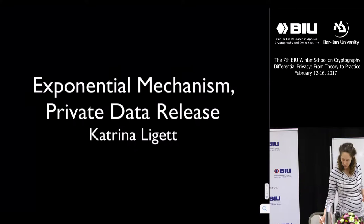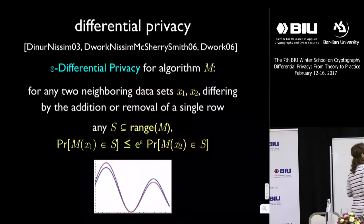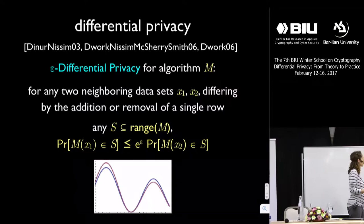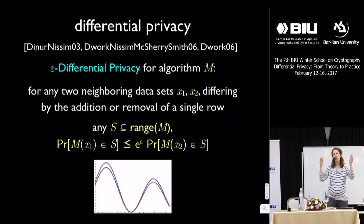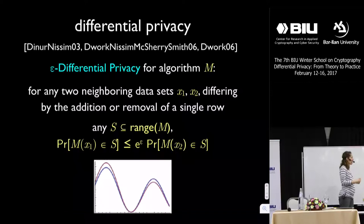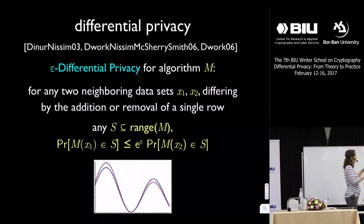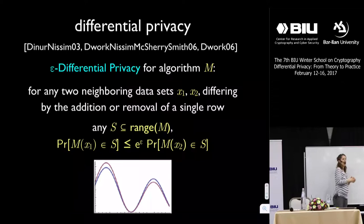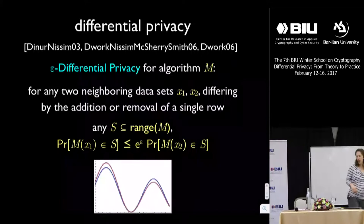Just to remind all of us where we were — since it's first thing in the morning — we're working with this notion of differential privacy, this epsilon or epsilon-comma-delta parameterized notion of privacy. This is a property of an algorithm, a property of a mapping from database space to outcome space. It says that how this mapping behaves is very constrained: for any two databases that differ in just one person's information, and any subset of the outcome space, we have to put nearly the same probability mass there. Nearly the same in the epsilon sense means we allow a multiplicative e-to-the-epsilon factor; in the epsilon-delta sense we also allow an additive delta.